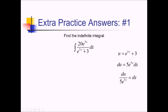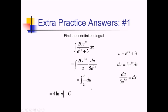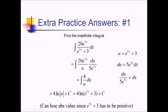Dividing, we can get dx equaling du over 5e to the 5x. Substituting back, we can replace e to the 5x plus 3 with u and dx with du over 5e to the 5x. The e to the 5x's cancel and 20 over 5 gives us a 4. The anti-derivative of 4 over u is 4 ln absolute value of u plus c, which substituting back gives 4 ln absolute value of e to the 5x plus 3 plus c. You can actually drop the absolute value since e to the 5x plus 3 is always positive — an exponential plus a positive has no way of coming out negative.